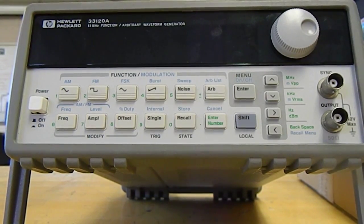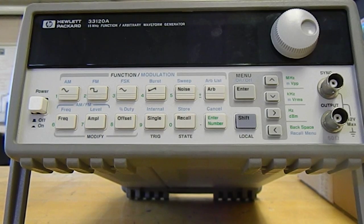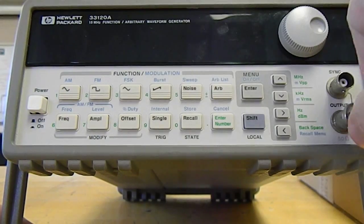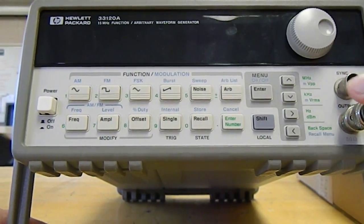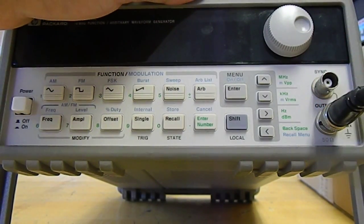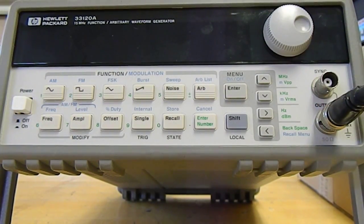This is an instructional video for an HP 33120A function generator. The first thing you need to do is make sure that the function generator is connected to power, and then you can connect the output. You can see this is output of the function generator via BNC cable to whatever circuit or device you're using this with.